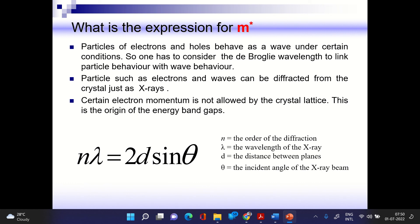Electrons and holes are treated as waves. In any bound state, they behave as standing waves. We can write wave functions describing their behavior and find de Broglie wavelengths to understand that behavior.